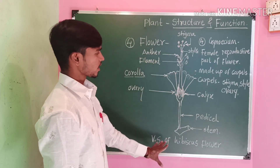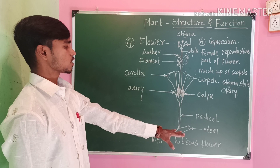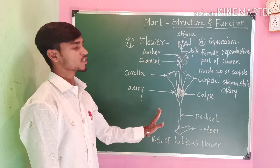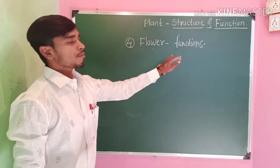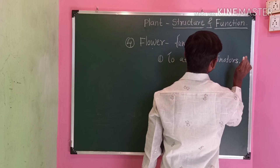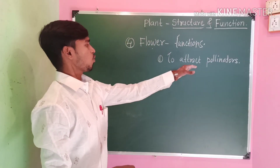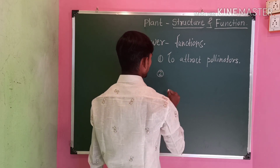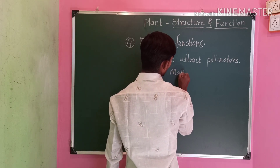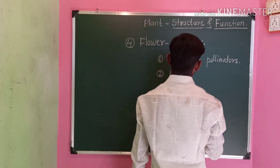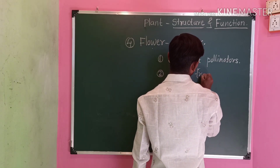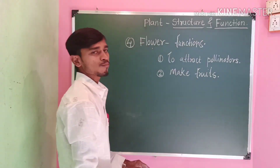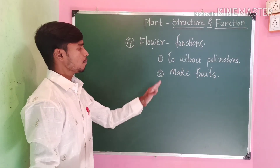This is the vertical section of a hibiscus flower and its various parts. Functions of flower: to attract pollinators and to make fruits.